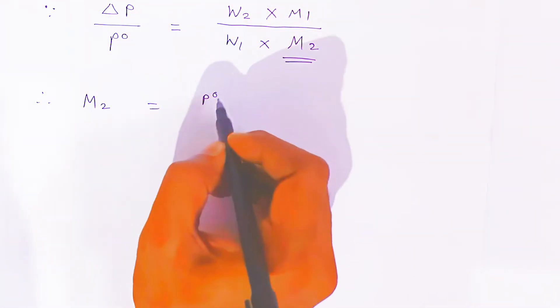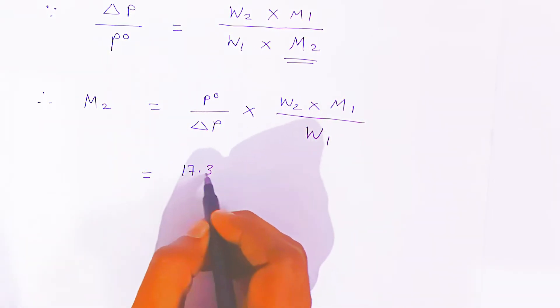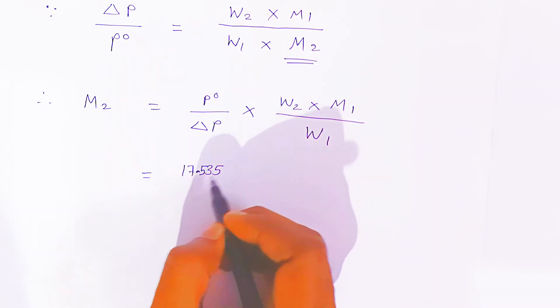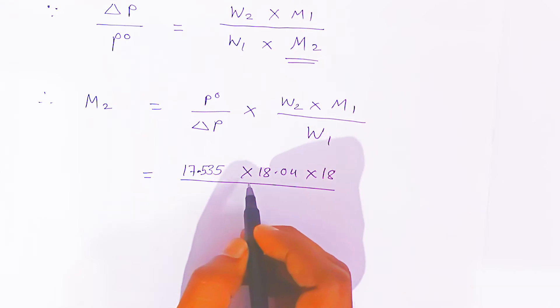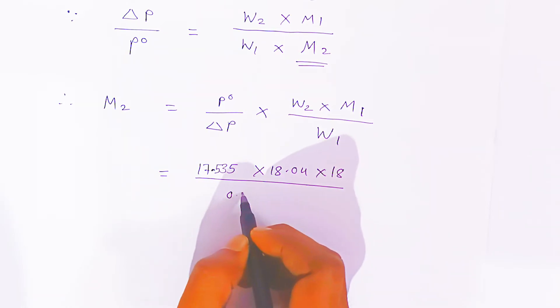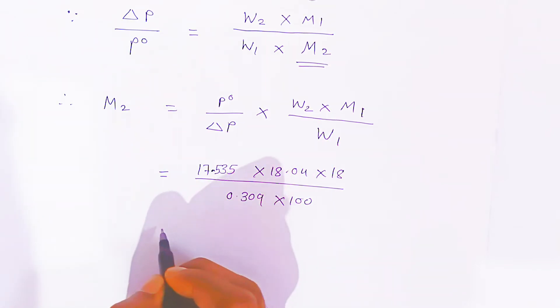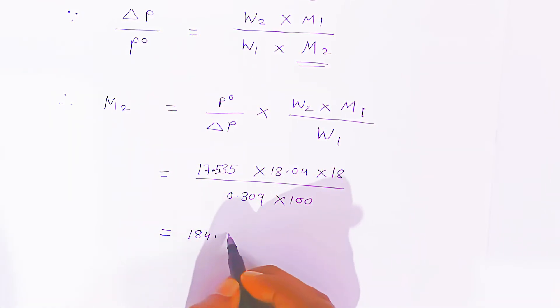Since we want M2, we do cross multiplication and rearrange: M2 = (P0 / delta P) × (W2 × M1) / W1. Substituting values: M2 = (17.535 × 18.04 × 18) / (0.309 × 100). Using calculation, it comes to approximately 184.3 gram per mole.